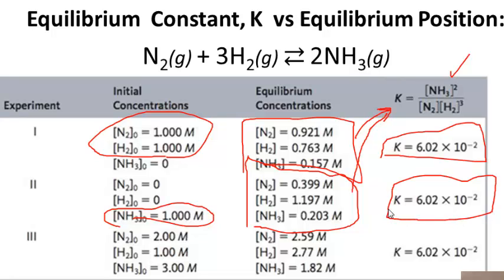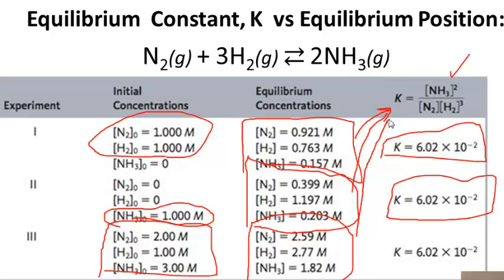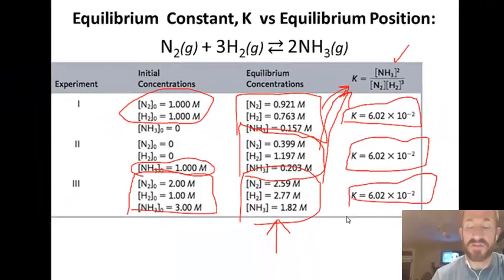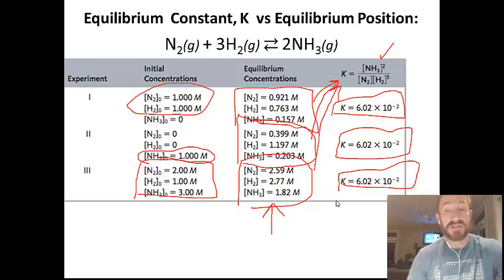In our third experiment, we have a mixture — we have nitrogen, hydrogen, and ammonia, so both reactants and products. They still react and form a different equilibrium concentration. These three values are then inserted into the K expression, and yet again the equilibrium constant is calculated to be exactly the same. So regardless of which set of equilibrium concentrations you're given, they will always give you the same value of K as long as temperature is constant.